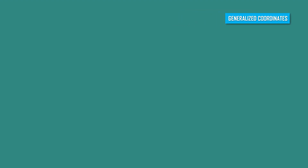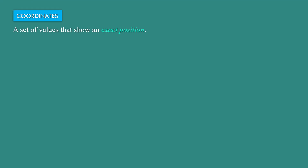Generalized coordinates. At first, let us discuss about coordinates. Coordinates means a set of values that show an exact position. Let us consider a point P in two-dimension. To find the position or location of this point P, let us draw two-dimensional coordinate axes OX and OY. To find the position of this point P, we need to move along X-axis and then along Y-axis. Then we will get the exact position of this point in terms of X and Y.